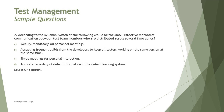Option A: weekly mandatory all-personnel meetings. As you know the team is distributed across several time zones, so personal meetings cannot take place and are not recommended. Option B: accepting frequent builds from developers to keep all testers working on the same version at the same time — this is difficult because in different time zones you cannot synchronize working on the same version simultaneously. Option C: Skype meetings for personal interaction. Personal interaction is not professional; while Skype meetings are a valid way for distributed teams to communicate effectively, the option specifies personal interaction, which is how they switch the option's meaning.